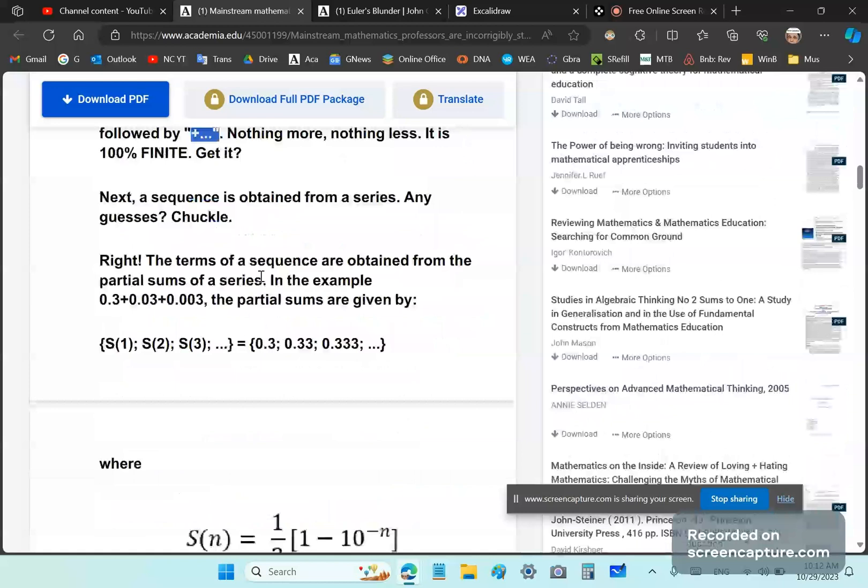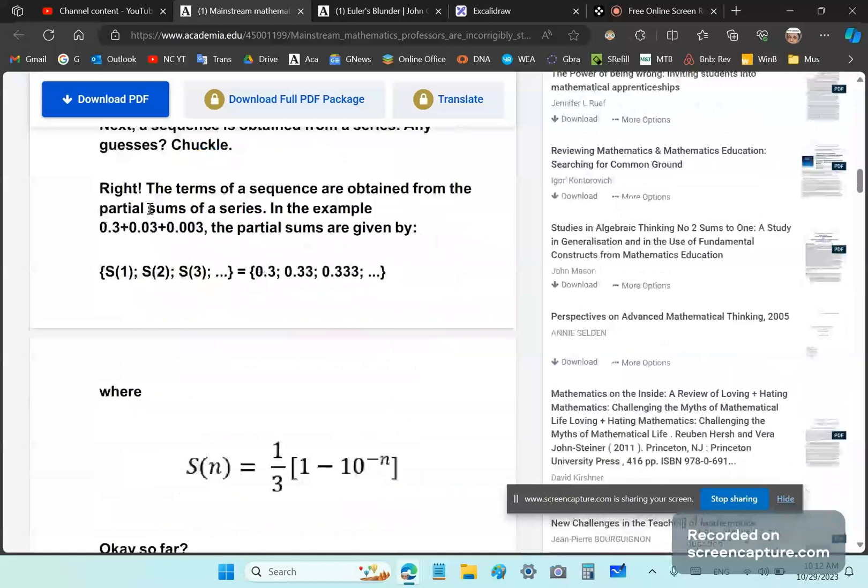So next, a sequence is obtained from a series. Any guesses? Let's see how. The terms of the sequence are obtained from the partial sums. So in the example 0.3, 0.03, et cetera, the partial sums are given as follows: 0.3, 0.33, 0.333, et cetera.